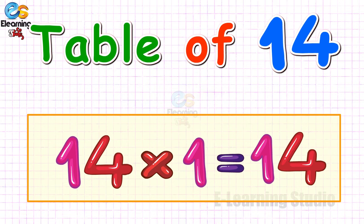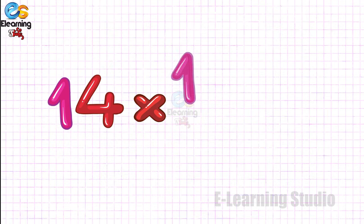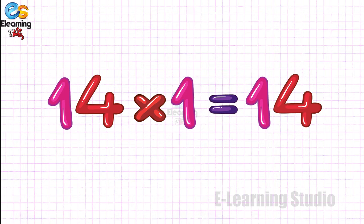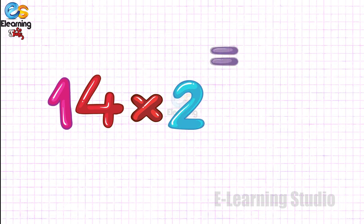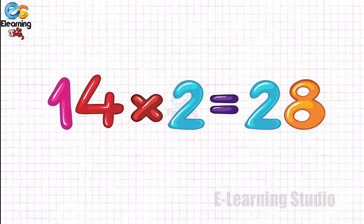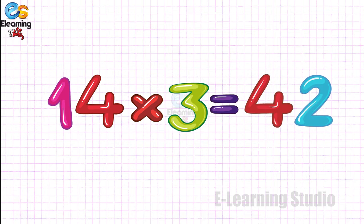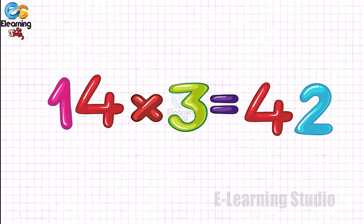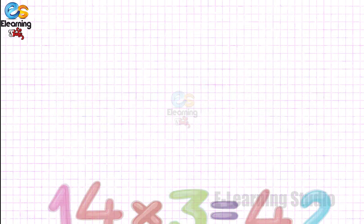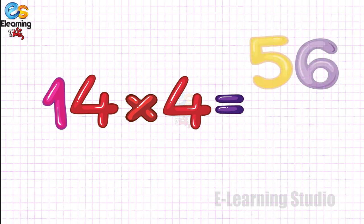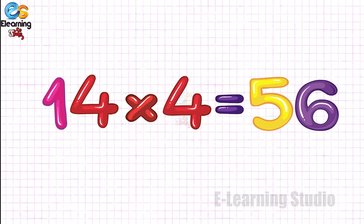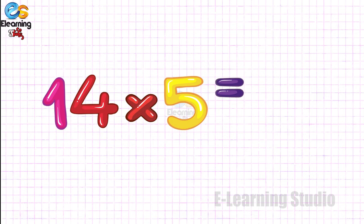Table of 14. 14 1's are 14. 14 2's are 28. 14 3's are 42. 14 4's are 56. 14 5's are 70.